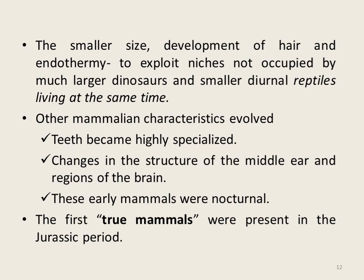Early mammals were nocturnal, being active mostly during night times, which is supported by the fact that most mammals lack color vision. We can therefore say that the first true mammals appeared in the Jurassic period.